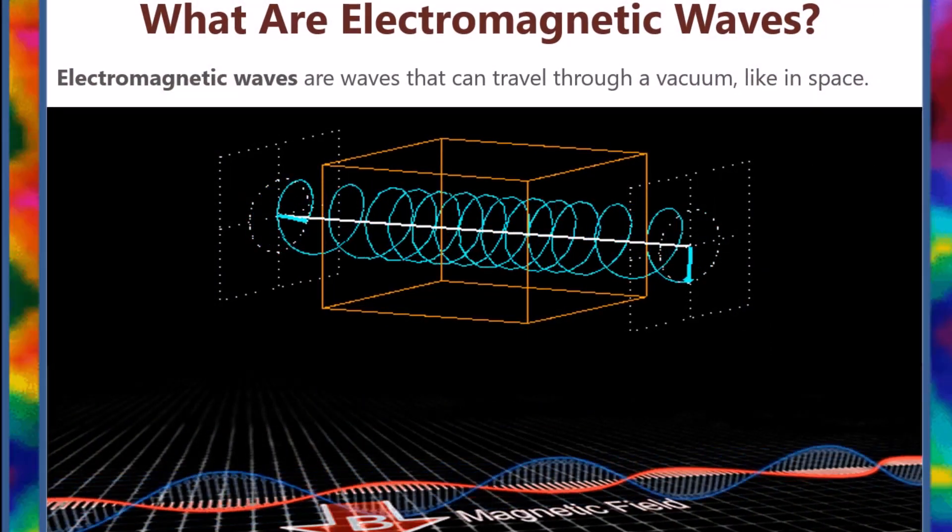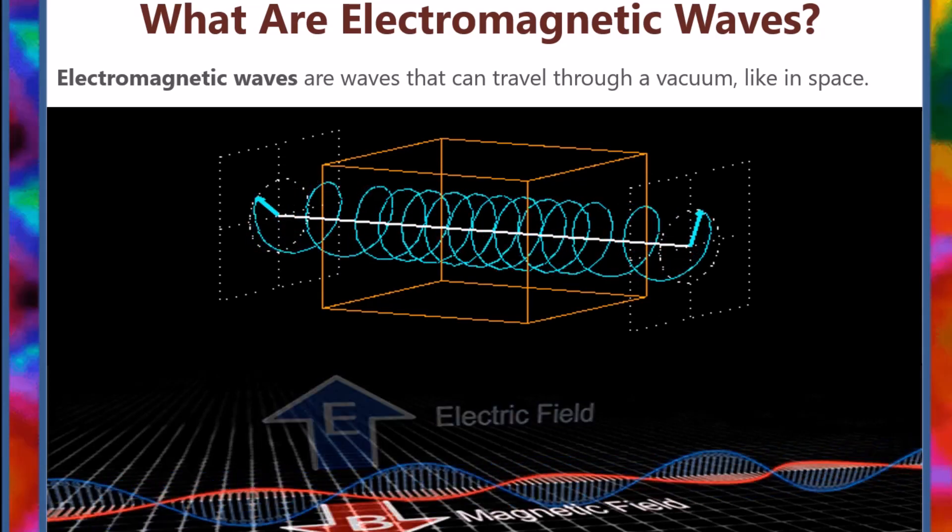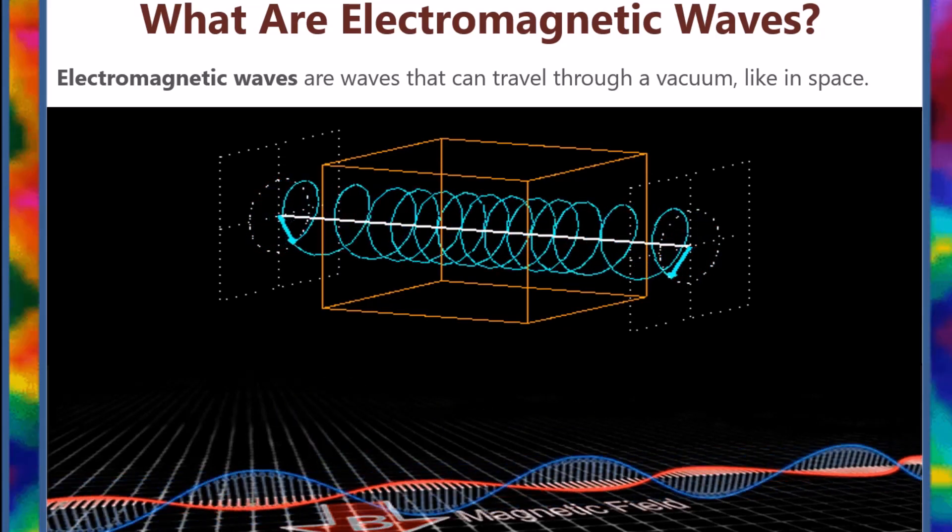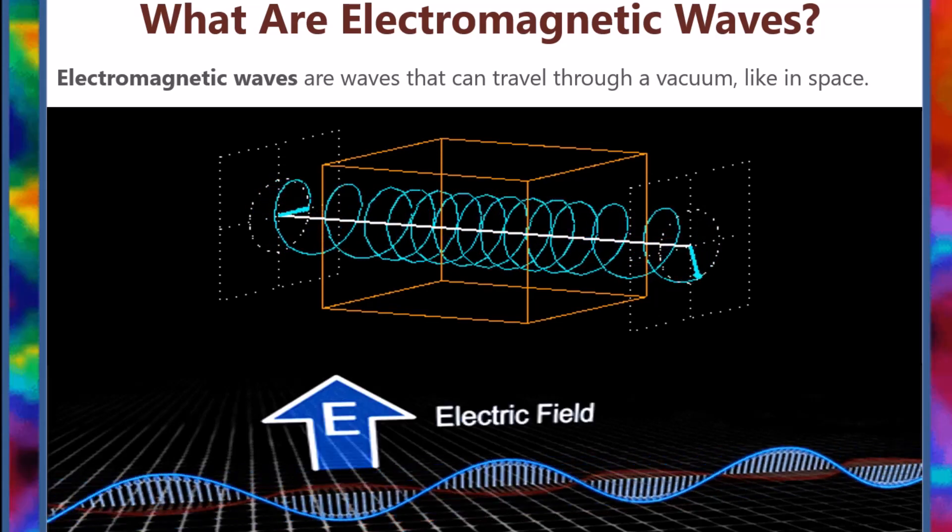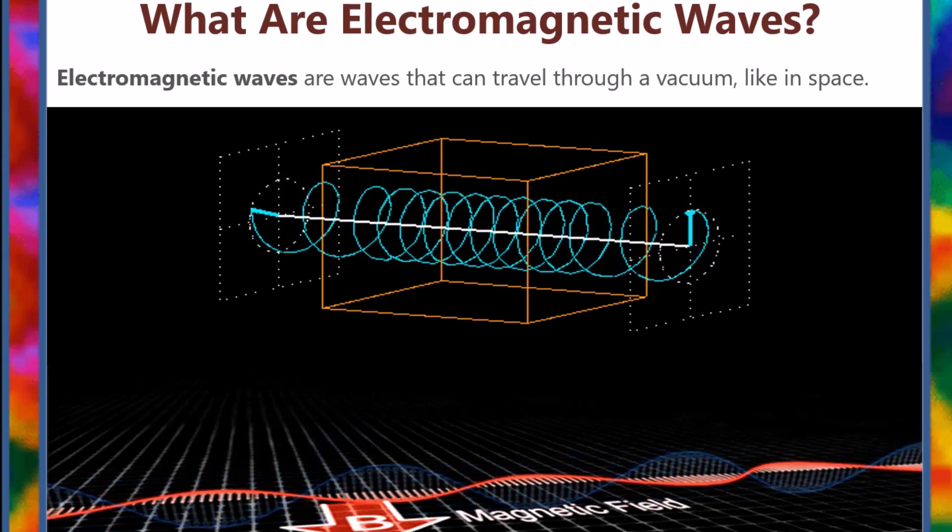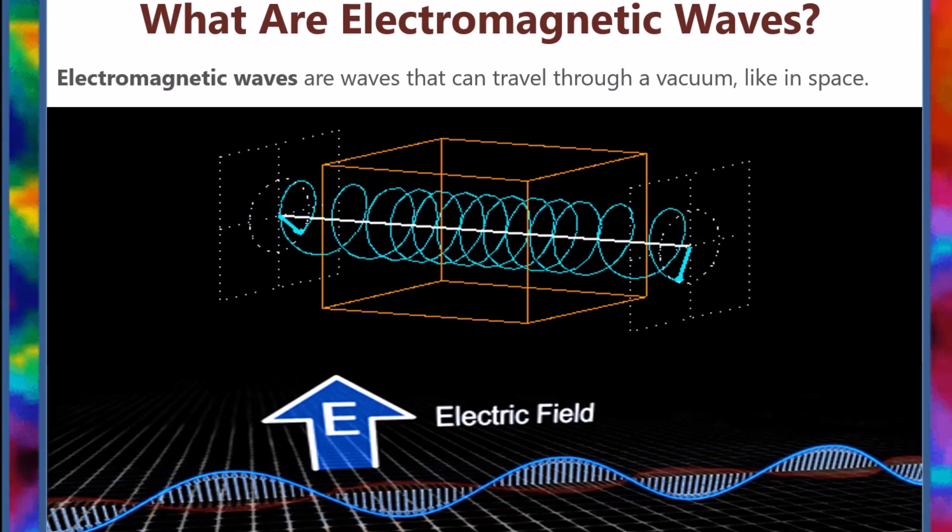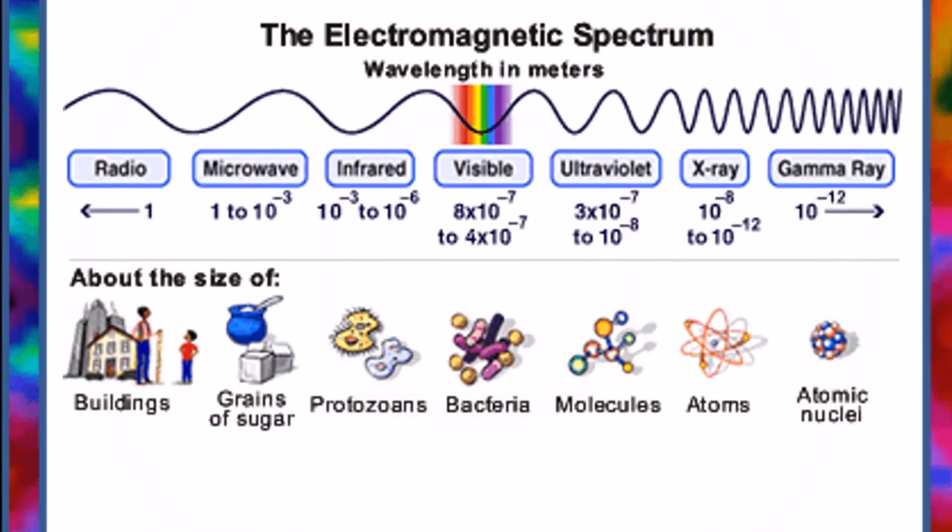What are electromagnetic waves? Electromagnetic waves are waves that can travel through a vacuum, like in space. This is possible because they're not vibrations in an actual material, they're fluctuations in electric and magnetic fields.